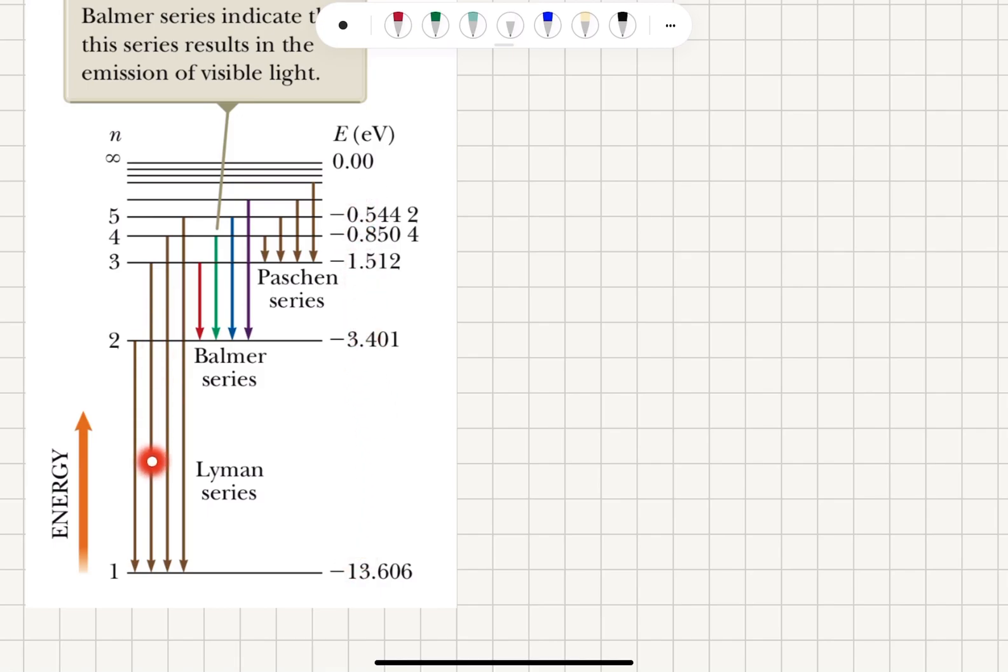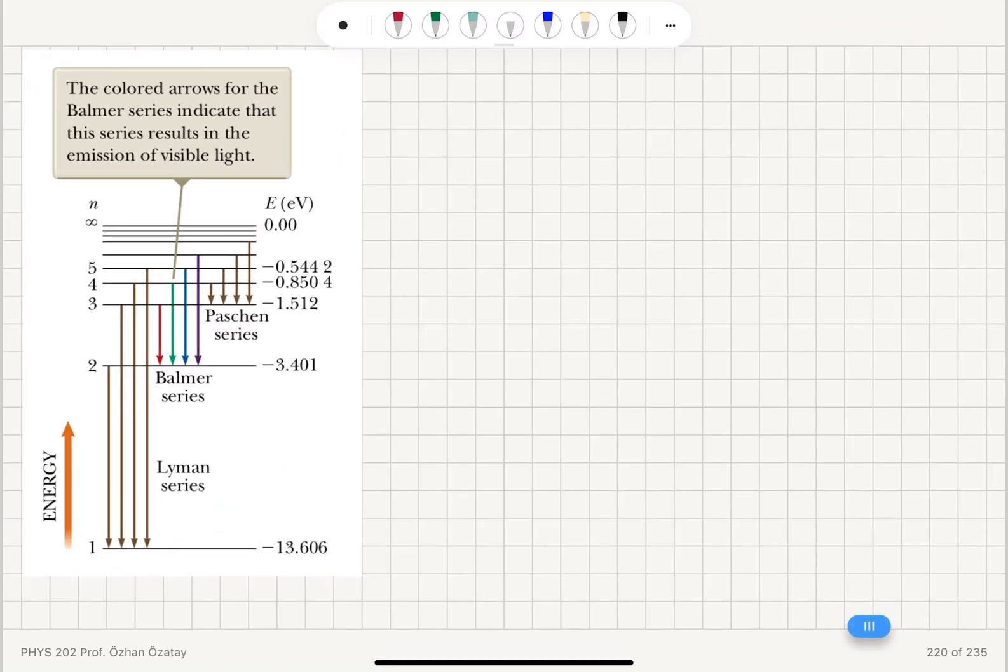You can see transitions from, for example, n equals 2 to n equals 1, n equals 3 to 1, 4 to 1, 5 to 1 would correspond to Lyman series. What is important here is that the line spectra that we see in the visible range come from Balmer series.